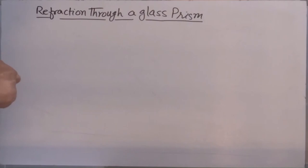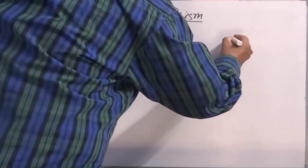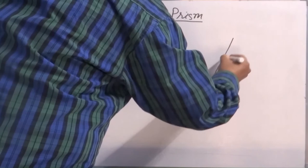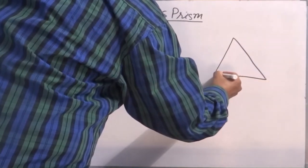Let us talk about refraction through a glass prism. What is glass prism? It is a refractive media which consists of two rectangular and three rectangular surfaces.